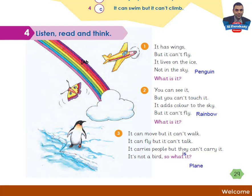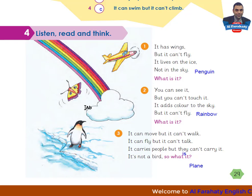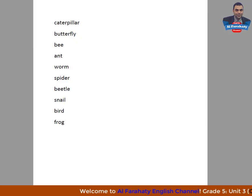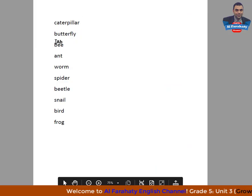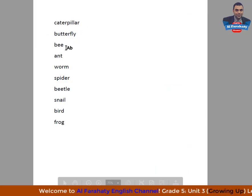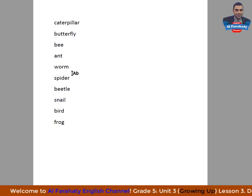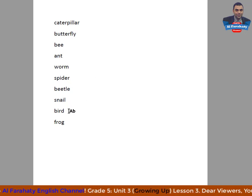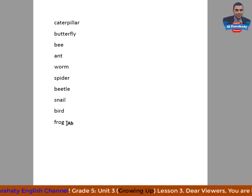By this we've achieved the aims of this lesson. Before we say goodbye, let me give you homework. You are asked to memorize these words for spelling: caterpillar, butterfly, bee, ant, worm, spider, beetle, snail, bird, frog. You can write these words at home and try to memorize them.